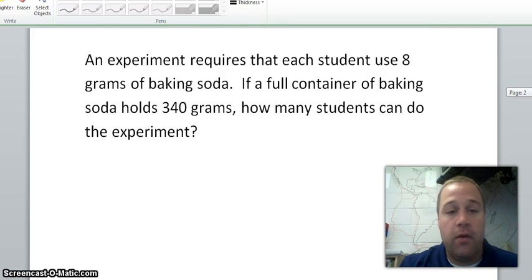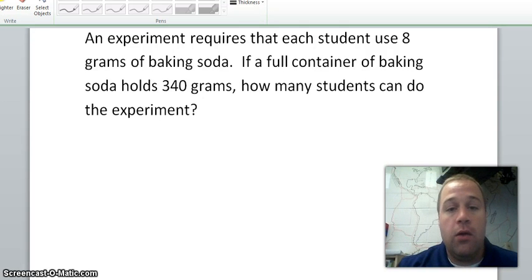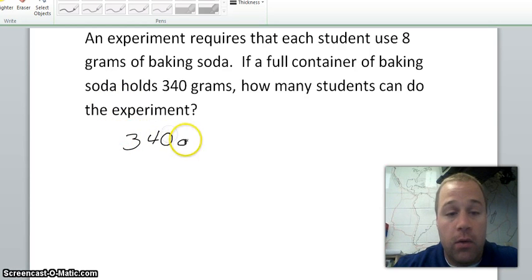Our next example is using the number of students. So it's actually going to give us the conversion problem in the problem. It says an experiment requires that each student uses eight grams of baking soda. That's our conversion factor. Every one student needs eight grams of baking soda. It says if a full container of baking soda holds three hundred and forty grams, how many students? So we're going to start in grams and we want to end in students. The number we're starting with is three hundred and forty grams.